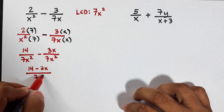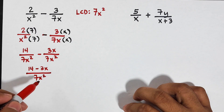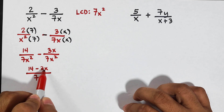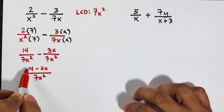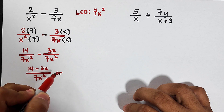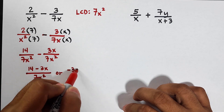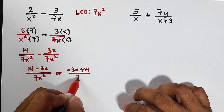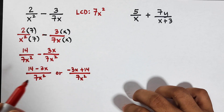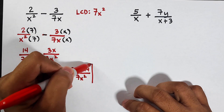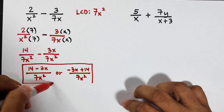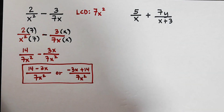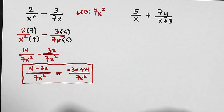Our answer is 14 minus 3x over 7x squared. If your teacher wants the variable term first, you can also express the final answer as negative 3x plus 14 over 7x squared. These are the possible answers for item number one.